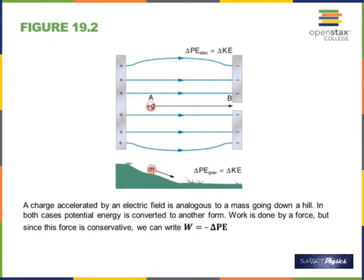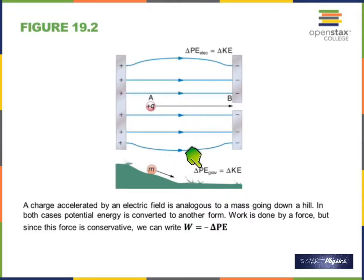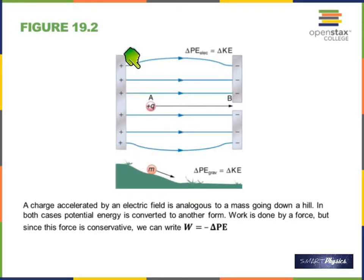Look at this diagram. As this ball rolls downhill, its potential energy is changing into kinetic energy. The change in potential energy equals the change in kinetic energy. If potential energy goes down by 20 joules, kinetic energy goes up by 20 joules. That is the situation in a gravitational field.